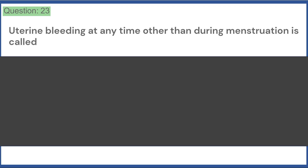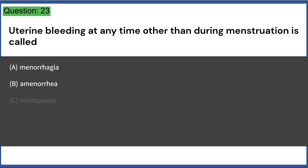Uterine bleeding at any time other than during menstruation is called: A. Menorrhagia, B. Amenorrhea, C. Menopause, D. Metrorrhagia, E. Menarche. Answer: D.